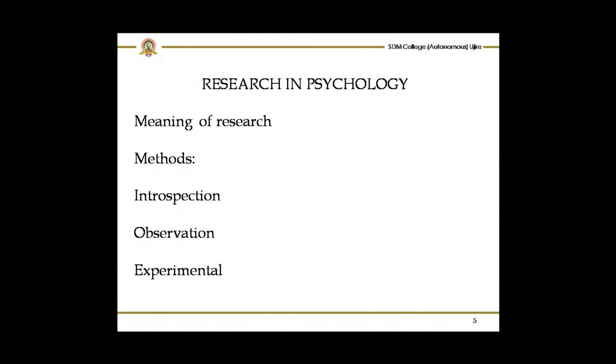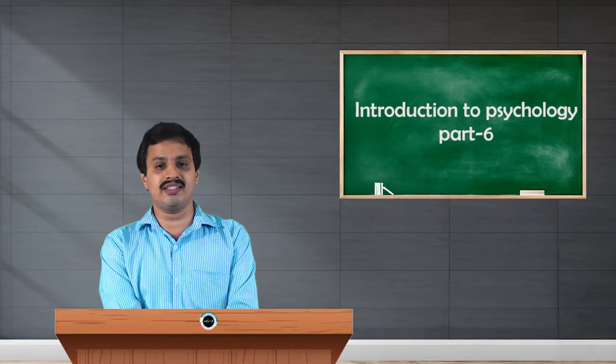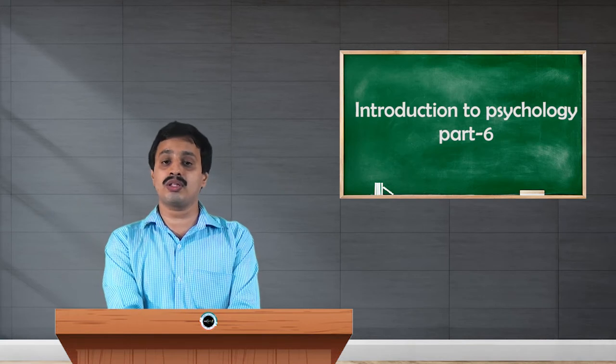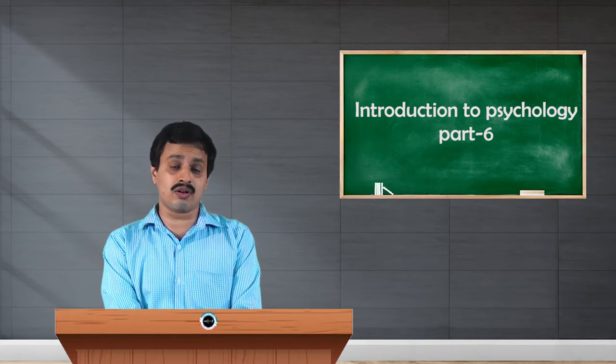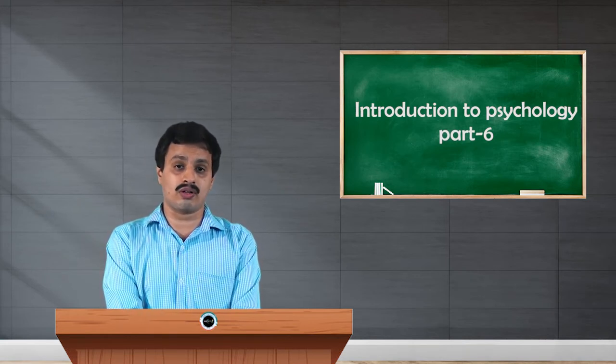These are the two types of processing involved in cognitive processing. Cognitive psychology has also extended branches of research, namely cognitive neuroscience and artificial intelligence. These are some of the extended areas of research in cognitive psychology.